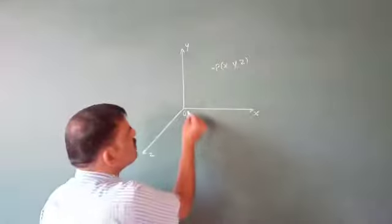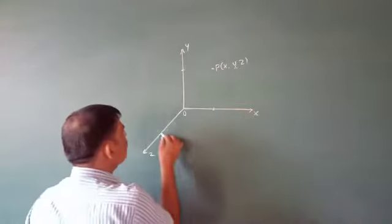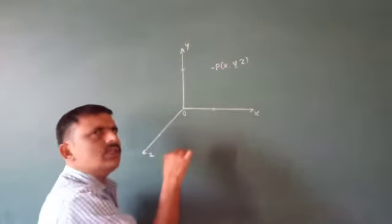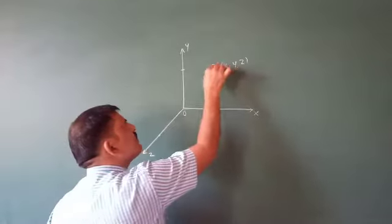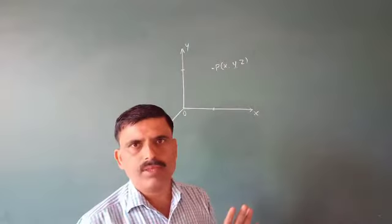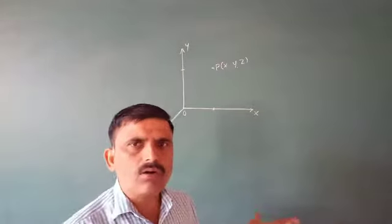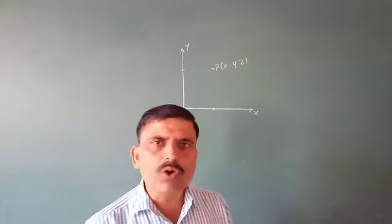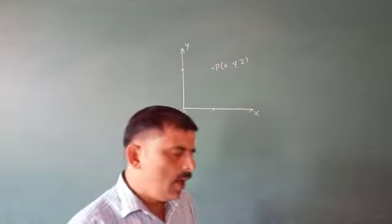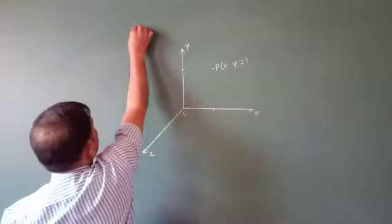A point is represented with reference to the x-axis, y-axis, and z-axis. In three-dimensional geometry, there are eight octants. The octants are named: first octant, second octant, third octant, fourth octant, fifth octant, sixth octant, seventh octant, and eighth octant. Next, we look at the distance between two points.